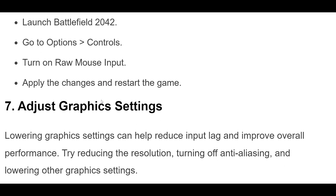Fix 6: Enabling raw mouse input can help reduce input lag by bypassing Windows mouse acceleration. To do this, launch Battlefield 2042, go to Options > Controls, turn on raw mouse input, then apply the changes and restart the game.